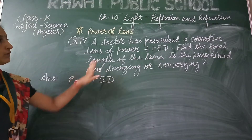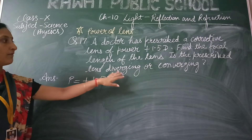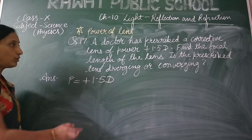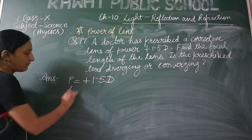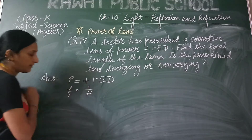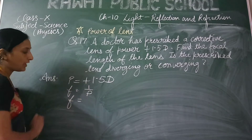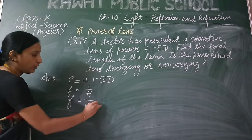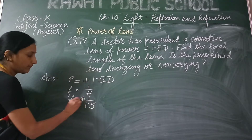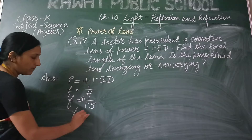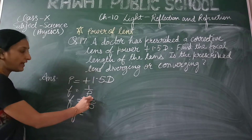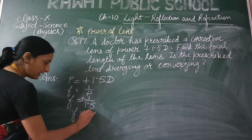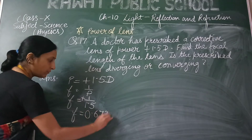Find the focal length of the lens. Is the prescribed lens diverging or converging? As we know that F is equal to 1 upon P, we can find out the focal length: 1 upon 1.5 with positive sign. So the focal length will be — dividing 1 by 1.5 — we get 0.67 meters.